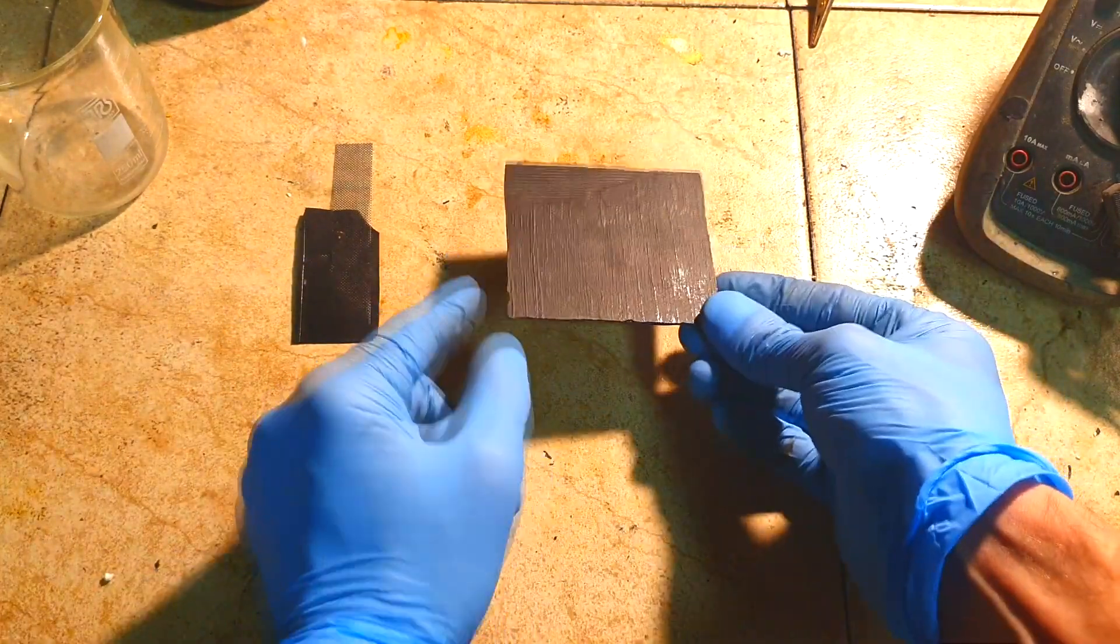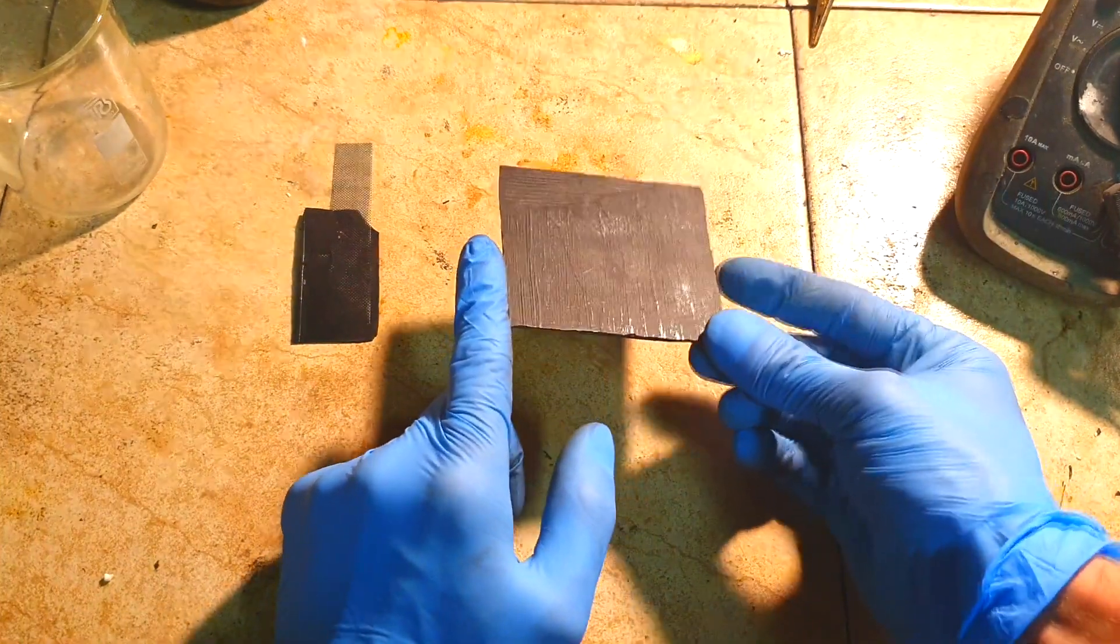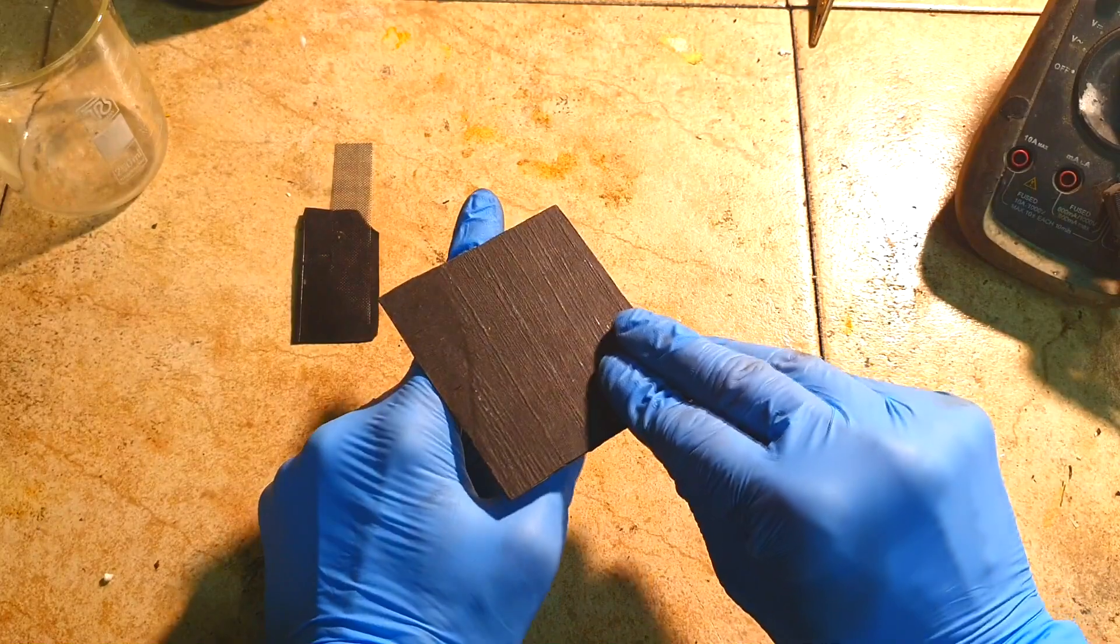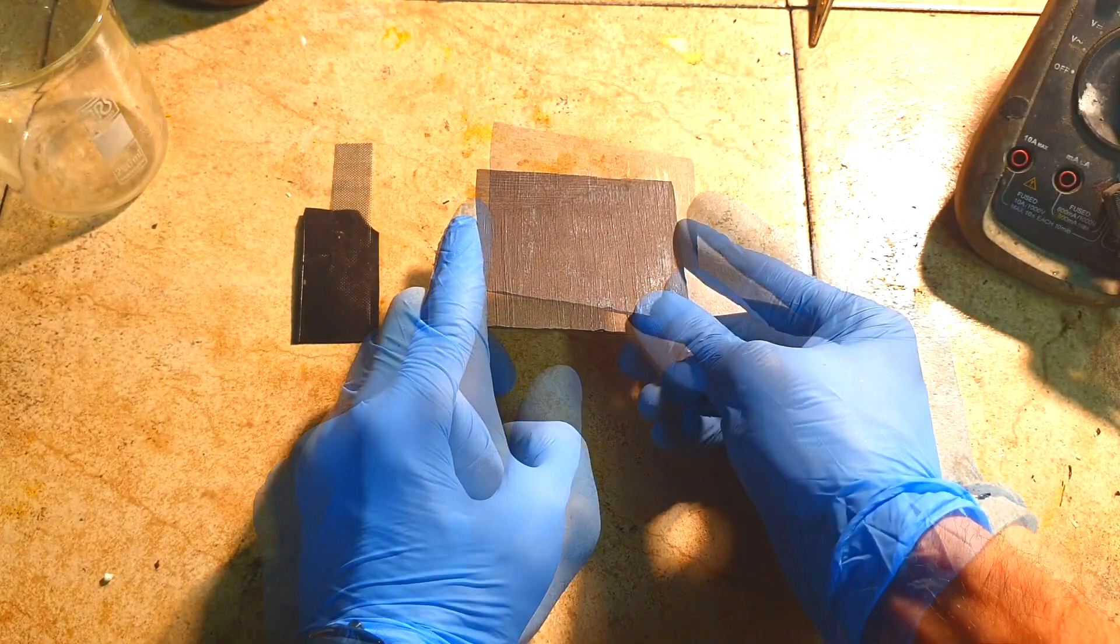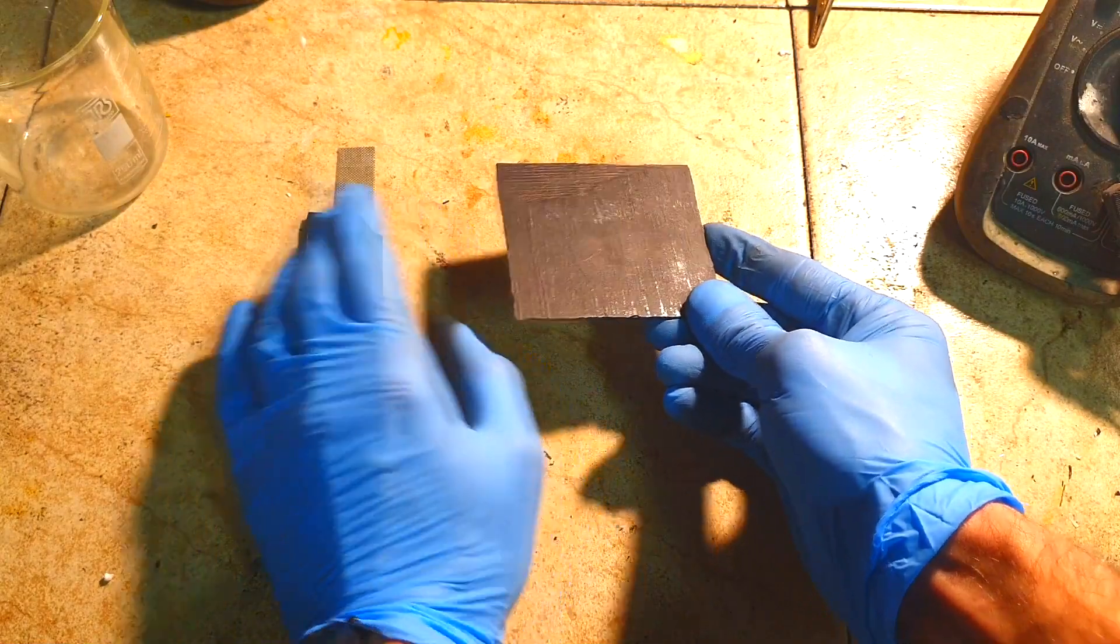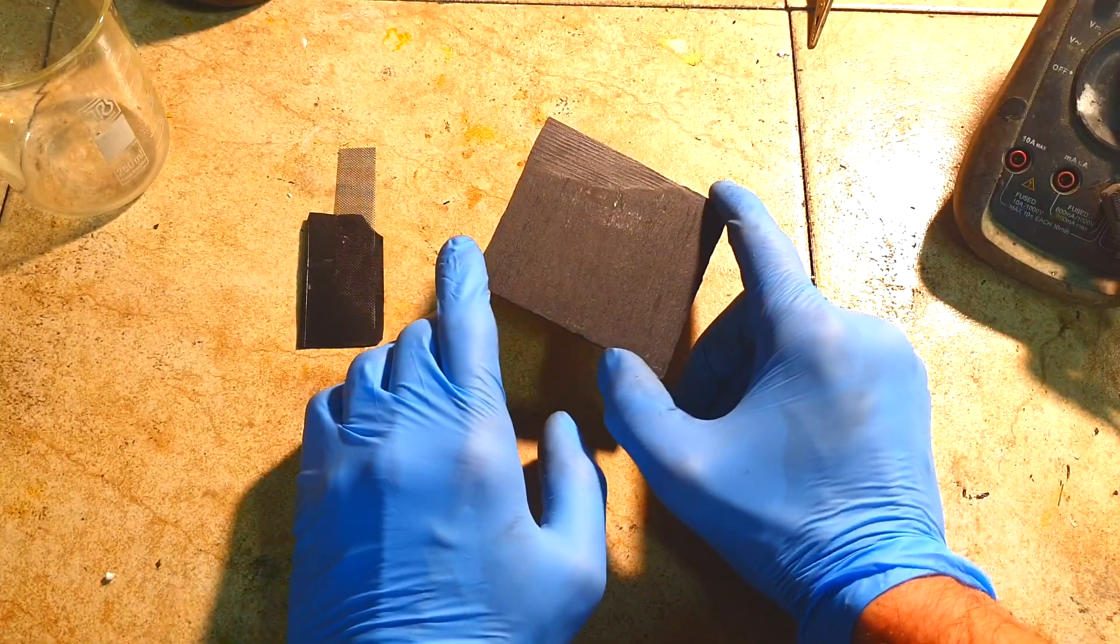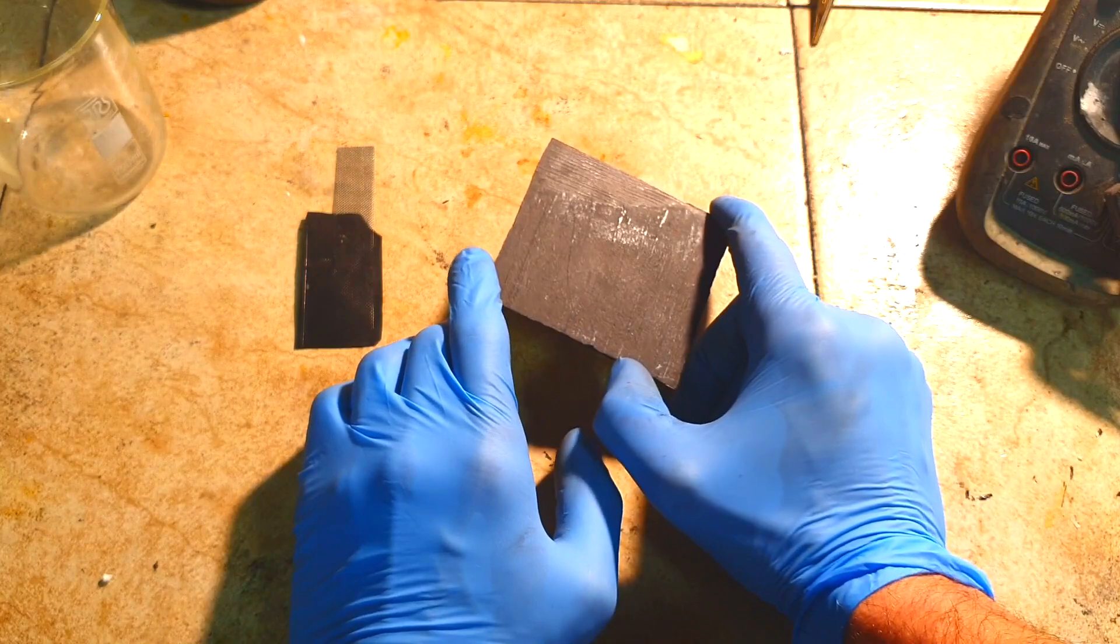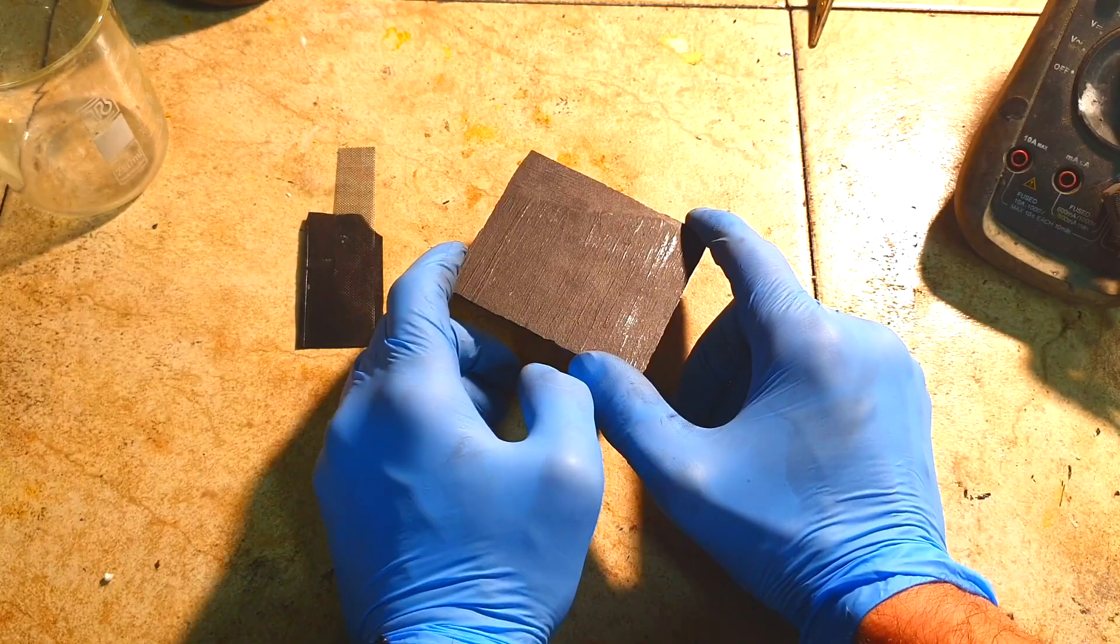In the end, you will get something like this. This sort of plastic can be used in many applications. For example, you can use it in batteries or supercapacitors.